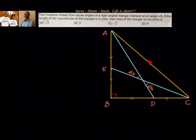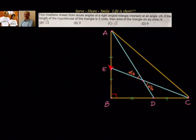To understand that, we have taken a right angle triangle ABC, with the right angle at angle B. AD and CE are the medians drawn from the acute angles of the right angle triangle, that is angle A and angle C. AD and CE are the two medians which are intersecting at an angle of pi by 6. So whatever the problem given, we have tried to represent that in the figure. Now we have to find out what is the area of this particular triangle. We have been given only one thing: the length of the hypotenuse is 3 units.